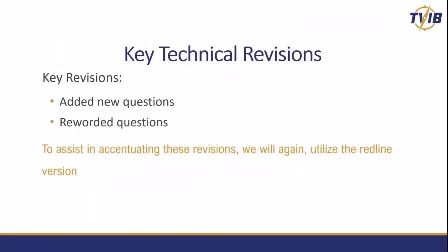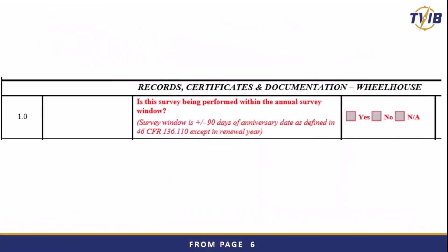There are key technical revisions in here as well. We've added some new questions and reworded some questions, and to help point these out we're going to use the redline version. I mentioned the annual survey window — the expiration date is where the survey window is based off of. You go to the definitions in 46 CFR 136.110 to find where the anniversary date is defined. This is a new question that's actually on the form now, because people were sometimes finding themselves outside of the window. For example, if you're in a shipyard period and couldn't get your survey done, there may be ways around that — still a finding, but the corrective action plan would be, for example, that you will do a survey prior to the vessel returning to service.